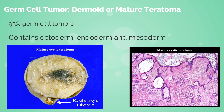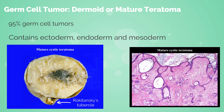The tumor has components of all three somatic cell types: ectoderm, endoderm, and mesoderm. Characteristically, the gross specimen will contain hair, teeth, and fat. A solid prominence called the Rokitansky protuberance is at the junction between normal ovarian tissue and the teratoma. This prominence has the most cellular variety and needs to be carefully evaluated for any malignant potential.